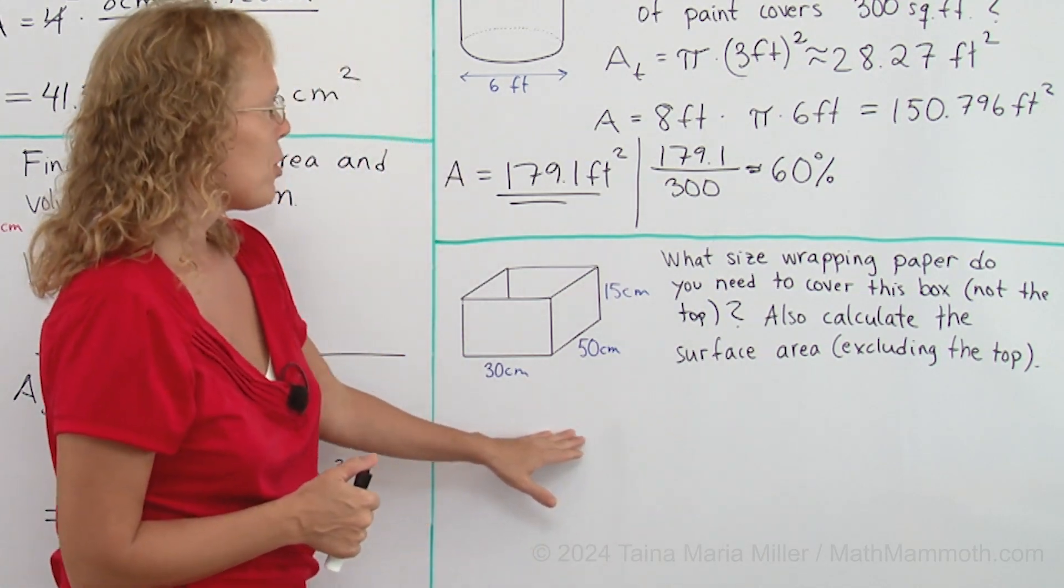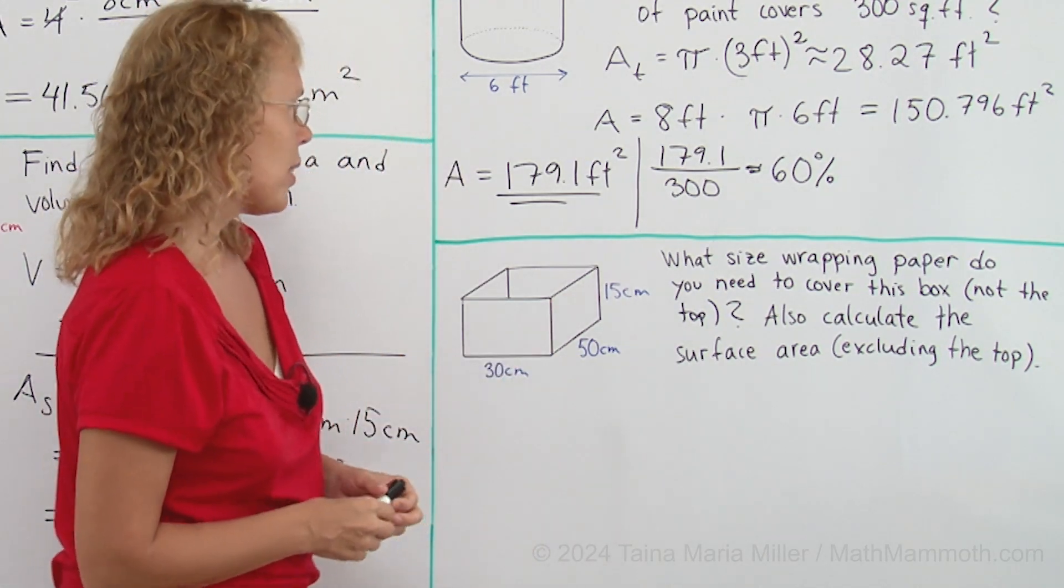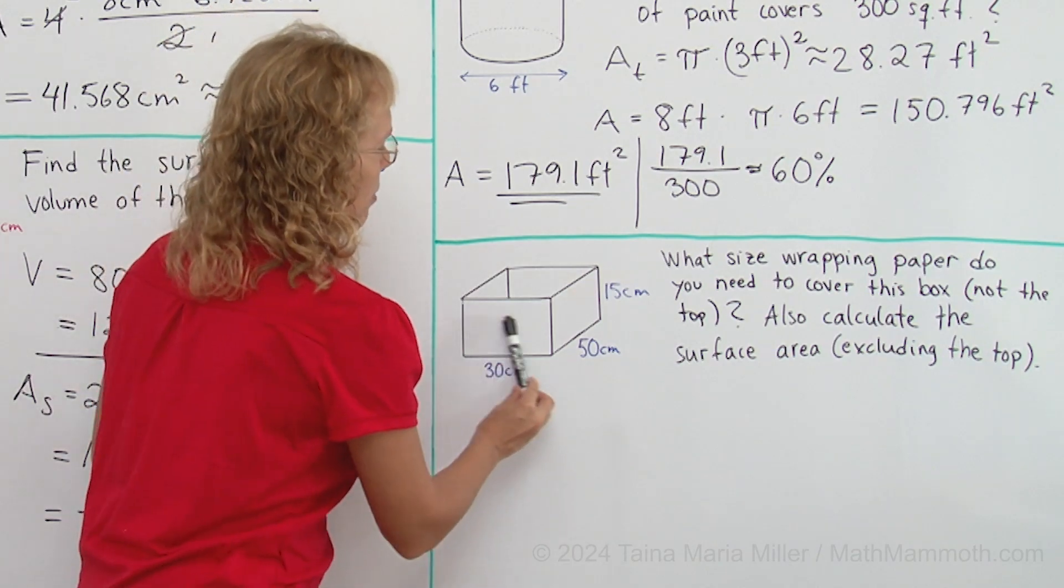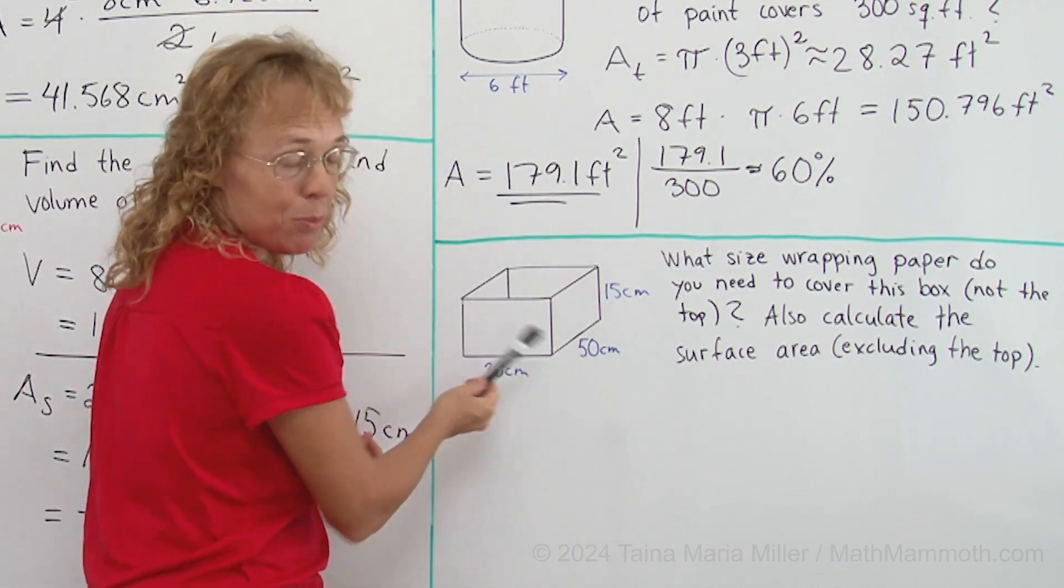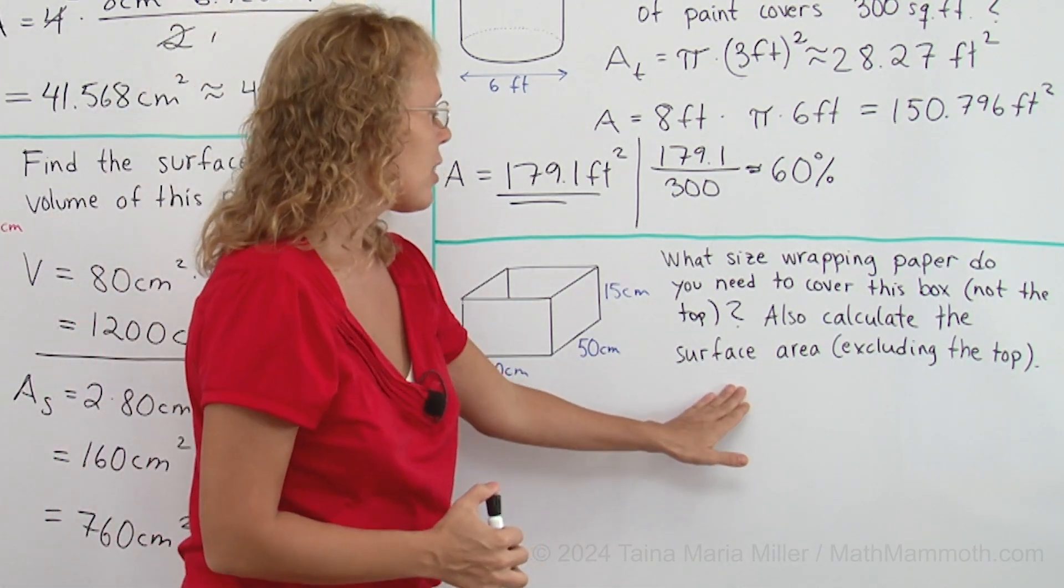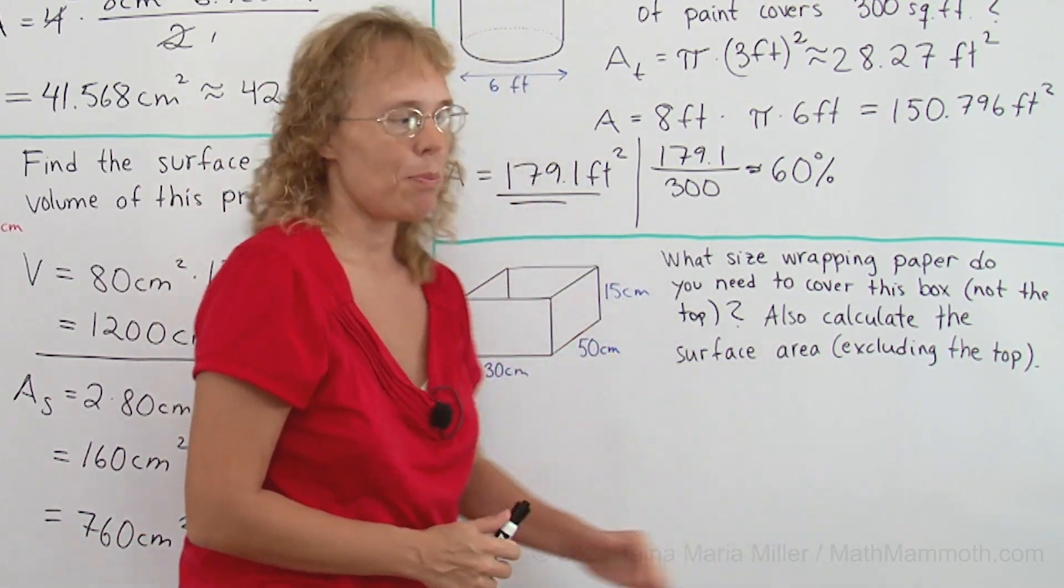Lastly, what size wrapping paper do you need to cover this box? Not the top. You wrap it around here and then the bottom too. Also calculate the surface area excluding the top.